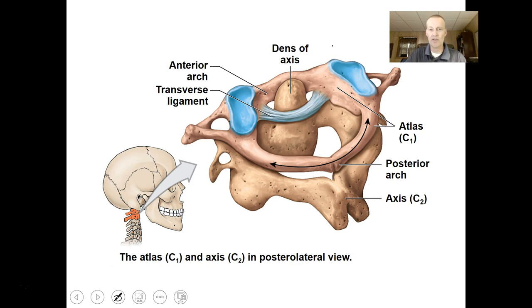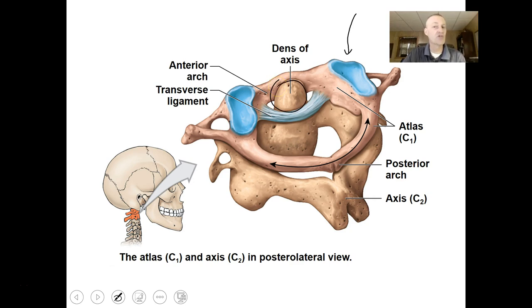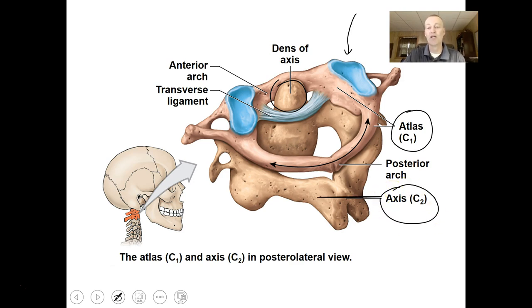Cervical vertebrae have a transverse foramen — not seen in other vertebrae — through which the vertebral artery feeds your brain. If you twist these vertebrae too much, you might sever that artery and cause massive internal bleeding. The vertebral foramen is where your spinal cord goes through. The spinous process, transverse process, and vertebral body are common parts on all vertebrae. The first two cervical vertebrae are the atlas (C1) and axis (C2) — they rotate around each other for side-to-side head movement. Atlas holds your head just as it holds the world.